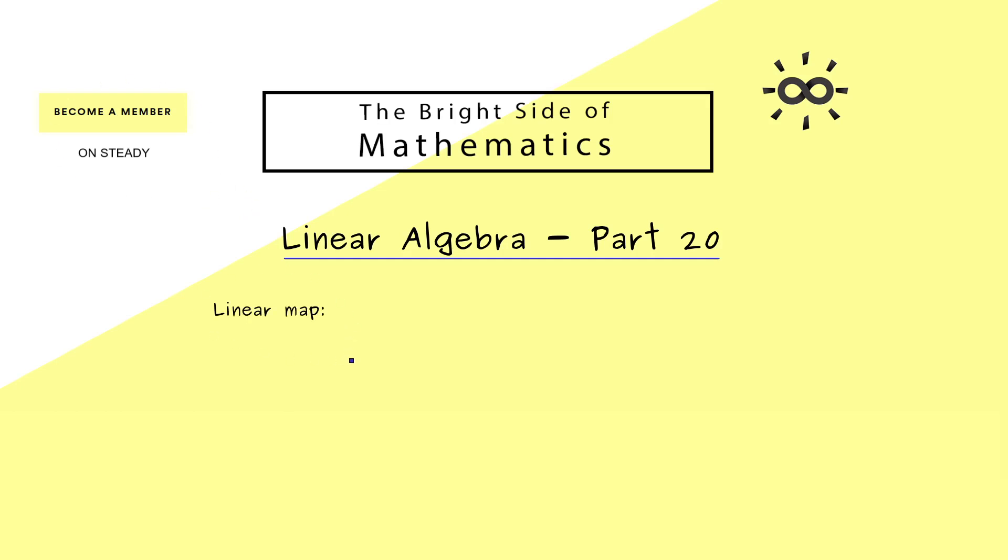Ok then without further ado let's look at a linear map. Now for us this is an abstract map we call f and the domain is the vector space R^n. And on the other hand the co-domain is the vector space R^m. And there please recall such a linear map fulfills two properties. Roughly said the two properties explain that you can pull out the addition sign and scalars. And indeed these two things make a map linear.